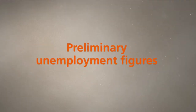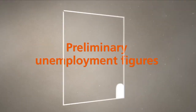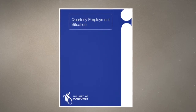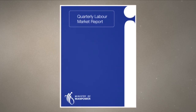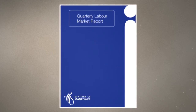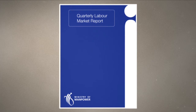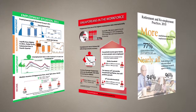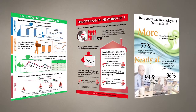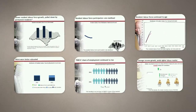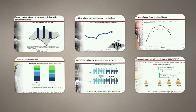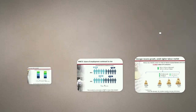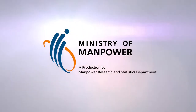Preliminary unemployment figures are published in the quarterly employment situation release, while updated figures are released in the quarterly labour market report. These publications can be accessed on our website, where you can view other related modules in this series and obtain key statistical findings on the labour market in rich infographics and videographics.